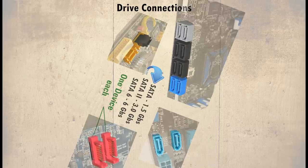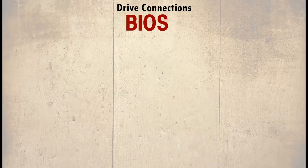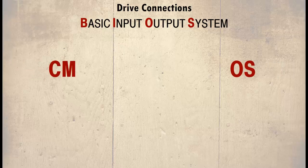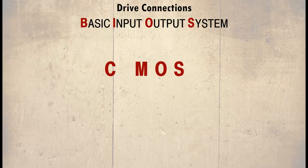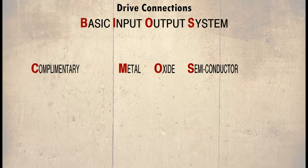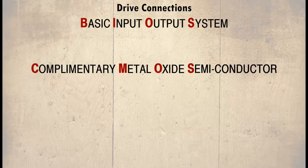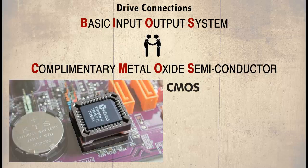Also during this task, we shall be looking at the BIOS, or basic input-output system, and also the CMOS, or complementary metal oxide semiconductor. We shall look at the relationship between these and how they can interact with each other. The BIOS is a software program that resides on the motherboard and is used to change the information held within the CMOS.